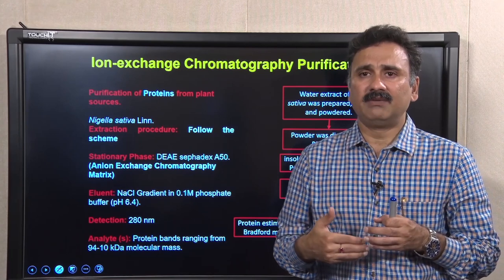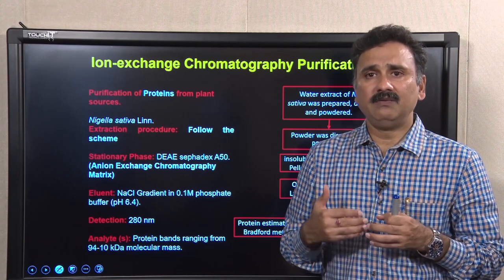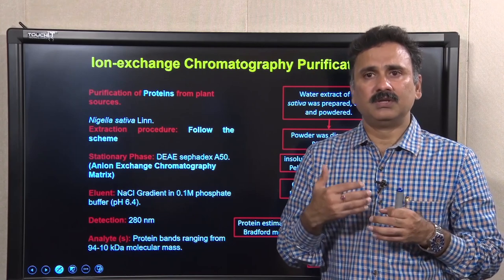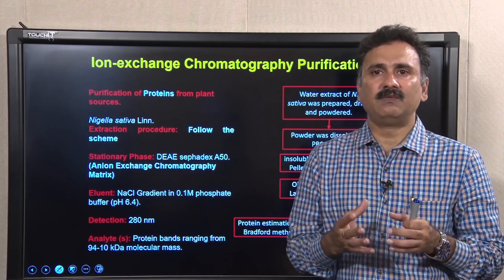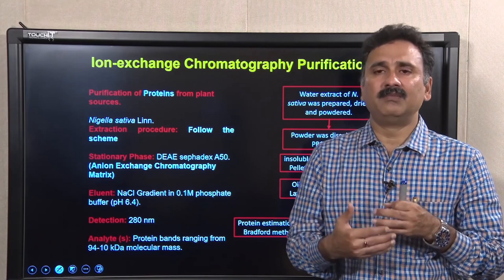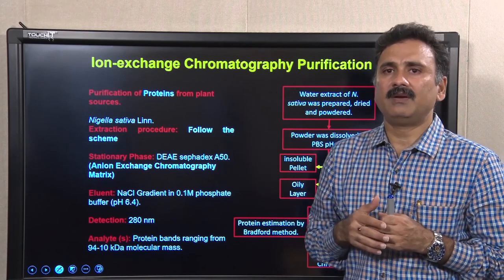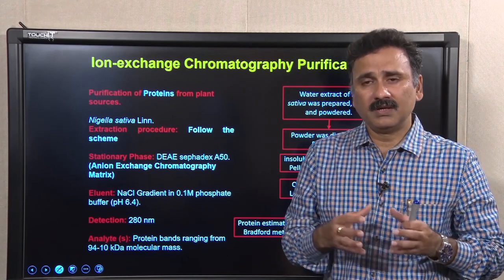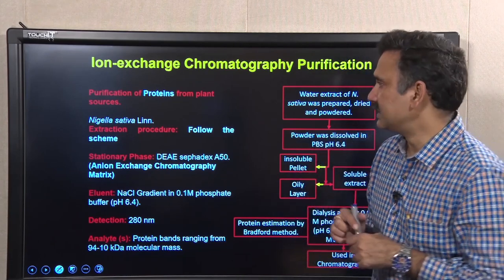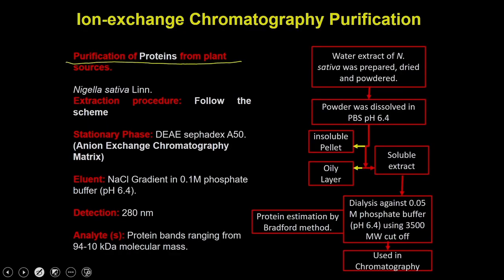We will go through several examples of how you can process samples and what precautions you have to take, to give you an idea about optimizing protein purifications of your own choice. The first example involves purifying proteins from plant sources — specifically from a plant called Nigella sativa.